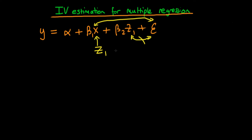We know by assumption that z1 is uncorrelated with the error term, and it might well be the case that z1 is correlated with x. Well, it turns out that we actually can't use z1 as an instrument for x, because essentially each variable on the right-hand side requires its own instrument, and each of those instruments has to be different.